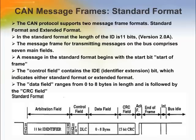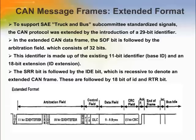The ACK field comprises the ACK slot and the ACK delimiter. In the extended CAN data frame, the SOF bit is followed by the arbitration field which consists of 32 bits. The first 11 bits are the most significant bits of the 29-bit identifier, followed by the substitute remote request or SRR bit which is defined to be recessive. The SRR bit is followed by the IDE bit, which is recessive to denote an extended CAN frame. The SRR bit in an extended CAN frame must be recessive to allow the assertion of a dominant RTR bit by a node sending a standard CAN remote frame. The SRR and IDE bits are followed by the remaining 18 bits of the identifier and the remote transmission request bit.